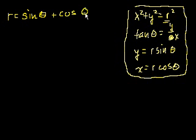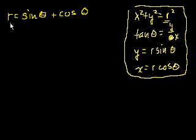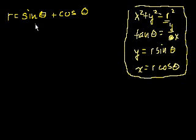Just so you don't lose the big picture — we could graph this in polar coordinates on a graphing calculator; it'll produce some curve, maybe like flower petals. But when we convert to x and y and graph it in Cartesian coordinates, it would look the exact same way. That's all we're doing — expressing the same relationship in terms of x and y.